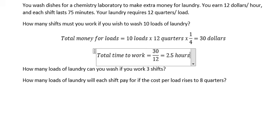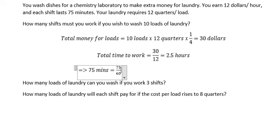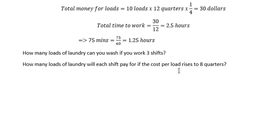The next one, we have each shift last 75 minutes. So we have total hours to work is about 2.5 hours. We need to convert 75 minutes to hours. 75 minutes is about 75 divided by 60, you got about 1.25 hours.